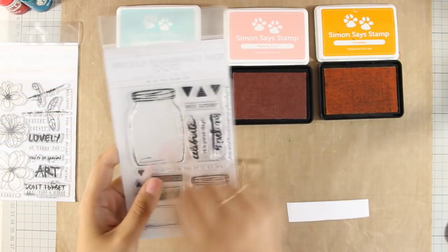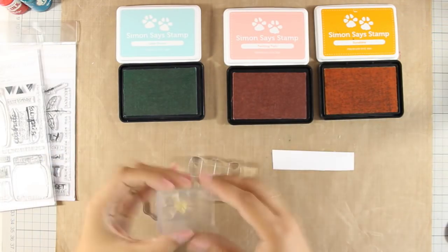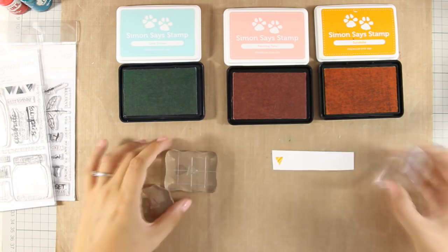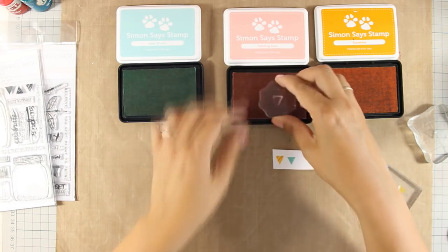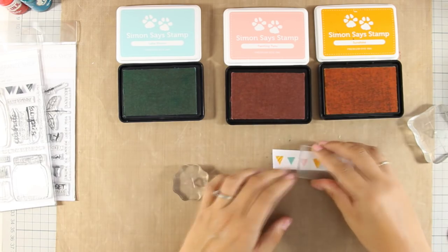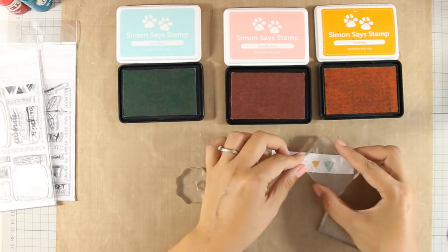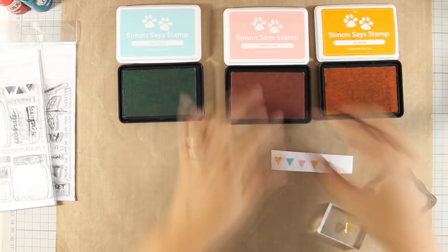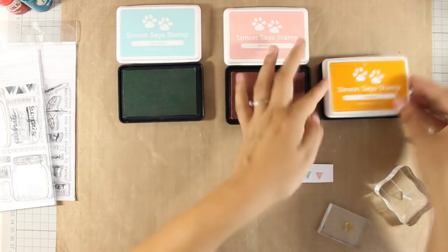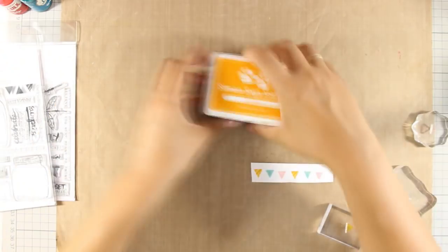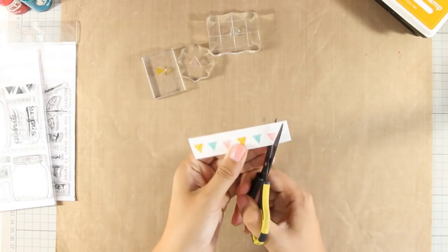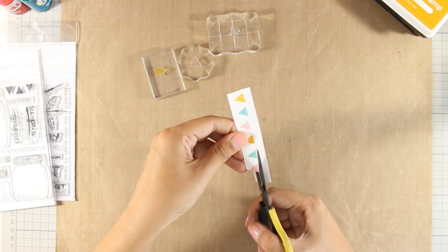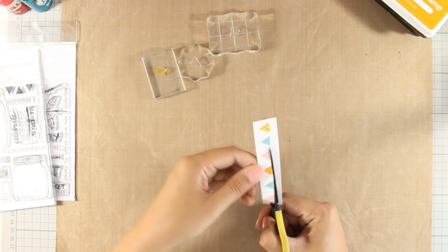In the Oh So Fun stamp set there are little triangles. One is solid, the other one has polka dots and the other one with stripes. Which I am going to stamp with different colors and I am going to create a banner for my jar. So I am using three different colors by Simon Says Stamp and I am going to link all the colors just below in the details area. I chose especially these colors because they really match the rest of the colors that I already have on my card.